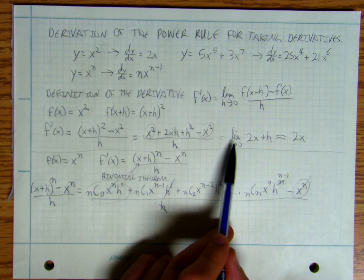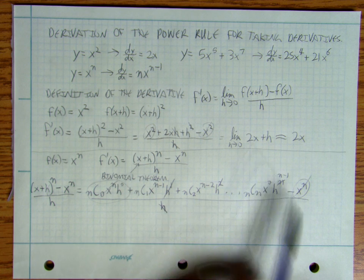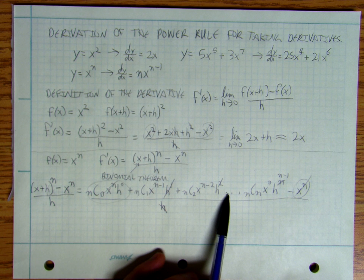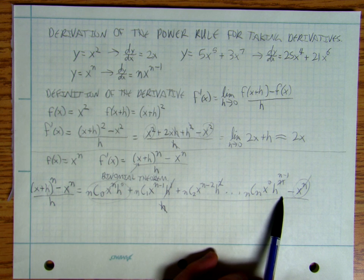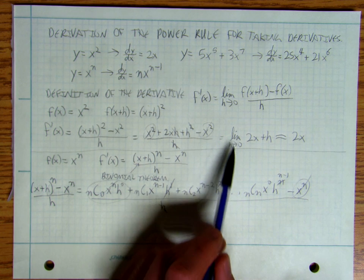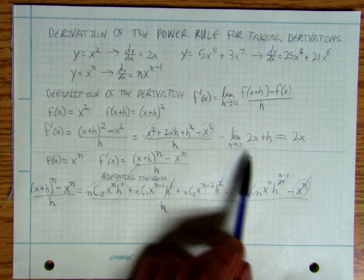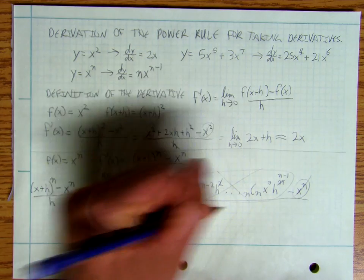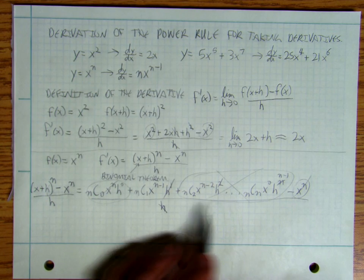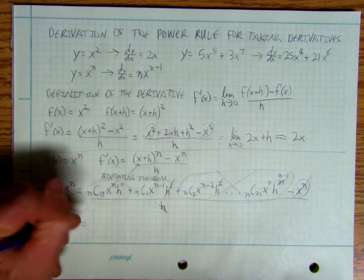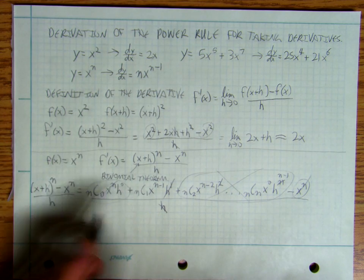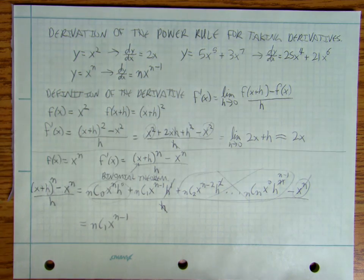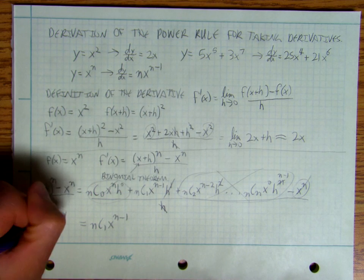Just like before, the second term no longer has an h in it after dividing, but all the subsequent terms still contain h's. When I take the limit as h goes to 0, all of those terms that still contain h's are going to go away. So what's left is nC1 times x to the n minus 1, and that is f prime of x.